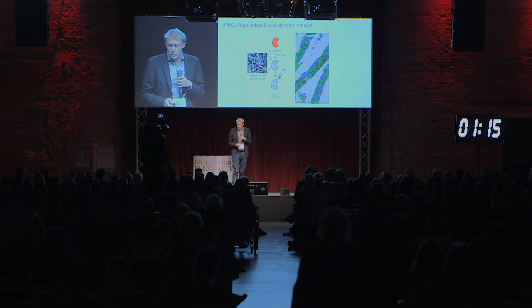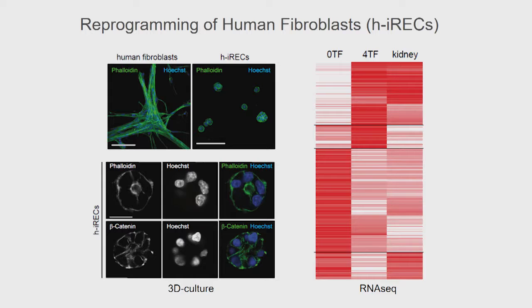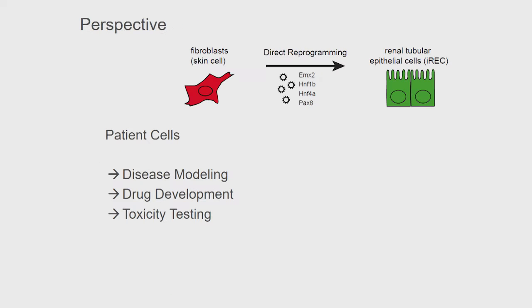So far I've only shown you mouse cells, and you may ask: is this also possible to do with humans? Yes, indeed, we can reprogram human fibroblasts, and they would also form these spheroids in 3D culture, and their gene expression profile is also very similar to human kidneys.